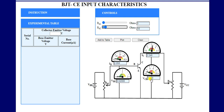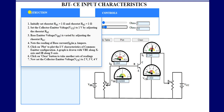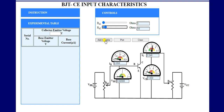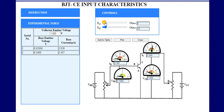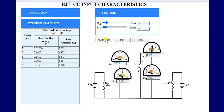Next, we change the value of RH1 to change the values of VBE and IB. By adjusting RH1, we vary VBE and note the reading of IB. Click on 'Add to Table.' Since we need at least 10 values to draw the graph, we repeat this process — changing RH1 and recording VBE and IB values into the experimental table 10 times.